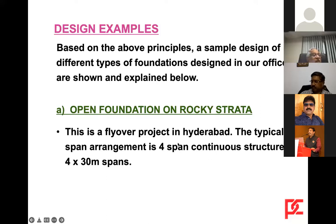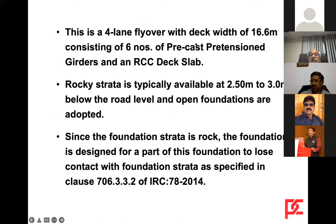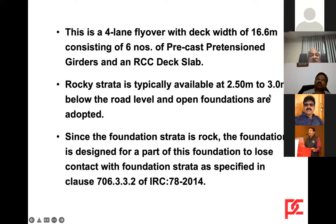We have done a flyover in Hyderabad on Road No. 45, Jubilee Hills. The typical span arrangement is a four-span continuous structure of 4 × 30 meters. This is a four-lane flyover with a deck width of 16.6 meters, consisting of six precast pre-tensioned girders and an RCC deck slab. In this location, rocky strata is typically available at two-and-a-half to three meters below road level, and hence open foundations are adopted.